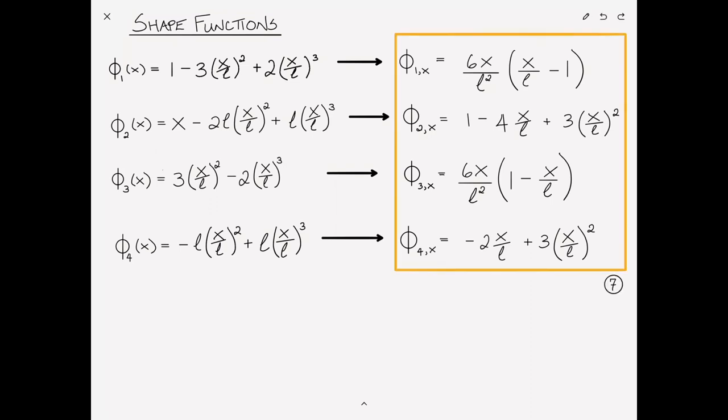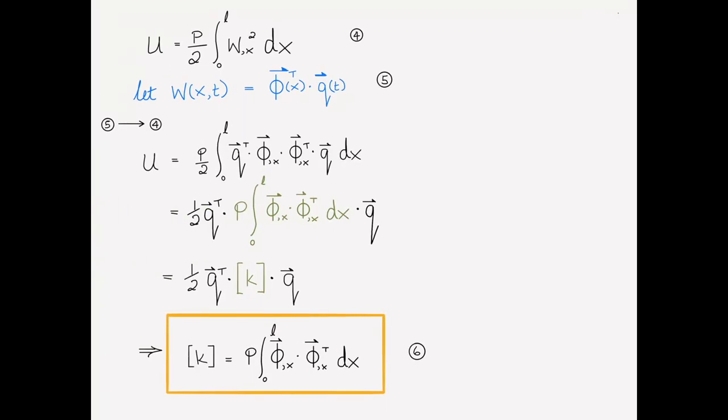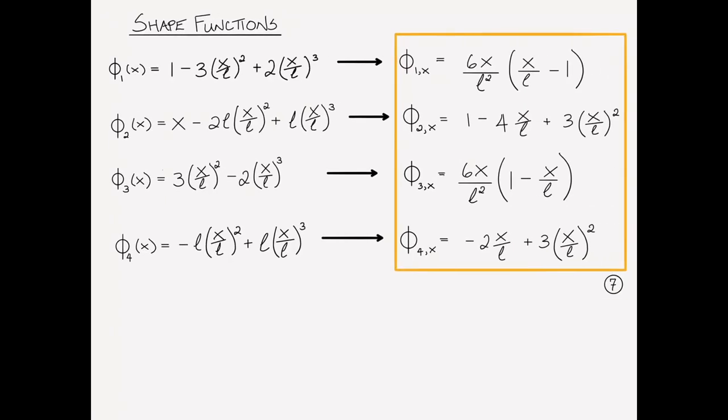So then what remains is to substitute these shape functions into equation six. So let's do that on the following page. Rewrite equation six, and now if we want to look at each individual element of k, that can be: kᵢⱼ equals p times the integral from zero to l of φᵢ,x times φⱼ,x dx. And so for example, if we want to find the element in the one two position, then the one and this would be φ₂, and by symmetry that would also give us element two one of the stiffness matrix. We'll call this equation eight.